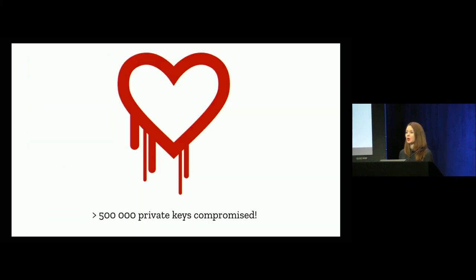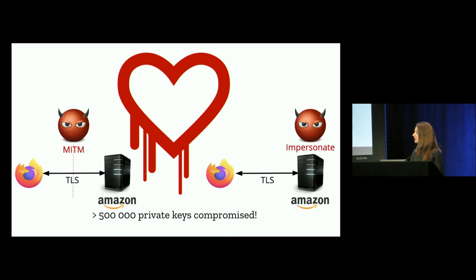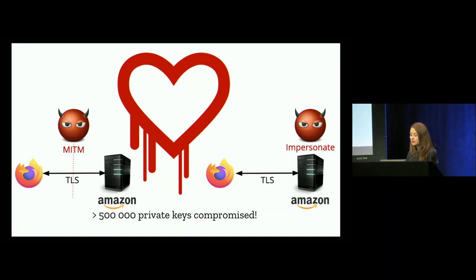But what if something goes wrong? It's estimated that over 500,000 private keys were leaked because of the Heartbleed vulnerability — and estimates vary, so it's probably a lot more. This means that an attacker could successfully man-in-the-middle your TLS connection and decrypt the current session, impersonate a server, or perhaps even decrypt past sessions. So this is bad.